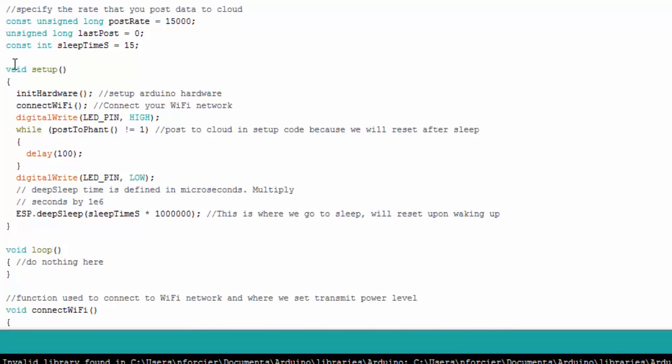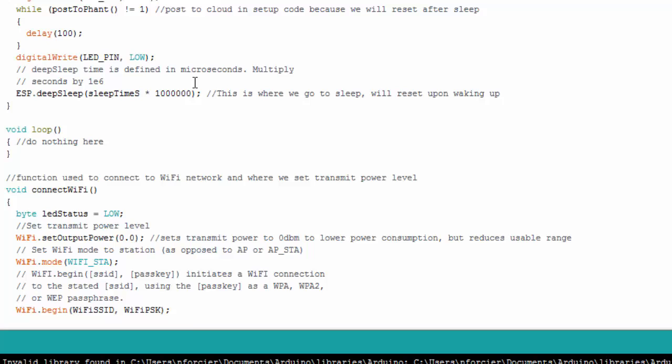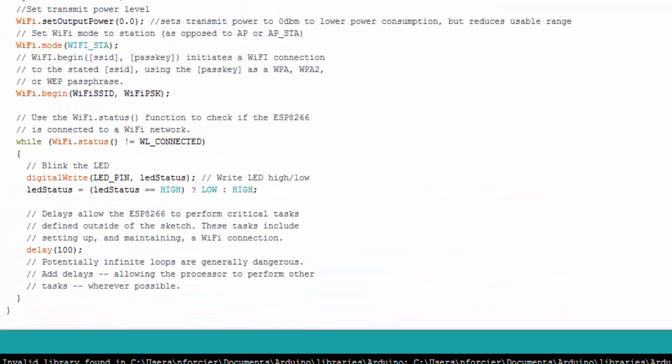Both these code examples will be on my blog. In the setup code, I do my thing, I send data to the cloud, I then go into deep sleep. Notice there's no code in the loop because I'm going into deep sleep. I think I do 15 seconds, and then what happens is it resets and I post to the cloud again. If I go into my connect to Wi-Fi function where I do all my Wi-Fi connection stuff, notice here is where I actually set the power level of the transmitter. I ran this once with this commented out and again with it not commented out. Let's see what the result is from a current profile.